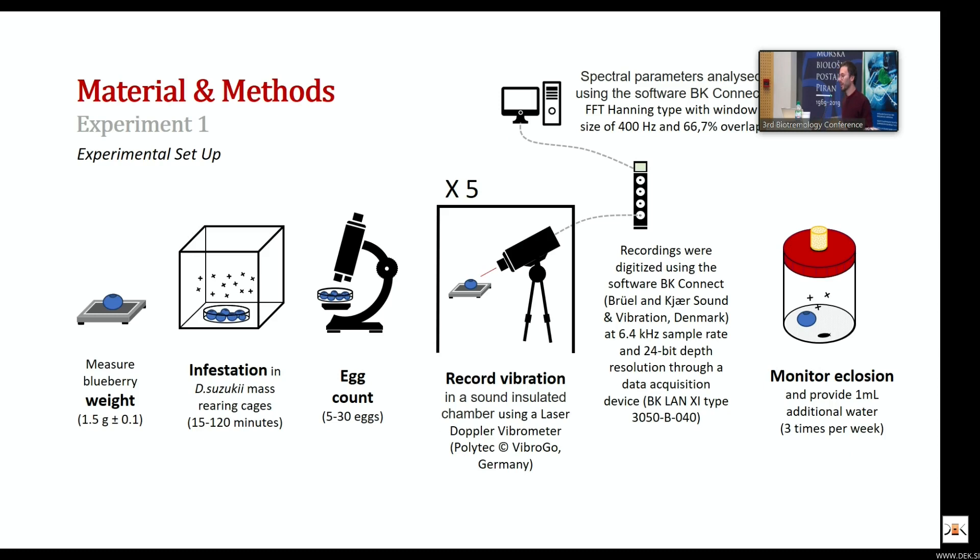This is the material and method of the first experiment. We took the blueberries, we infested them, we froze up to the larvae, we counted the eggs present on the fruit, and then we performed five different vibrational recordings at different intervals. So we had vibrational recordings done at five different times for each blueberry. And then we monitored the occlusion, checking how many adults emerged from the blueberry.